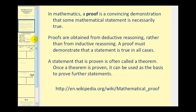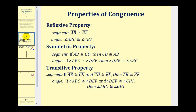Let's start by taking a look at the properties of congruence for segments and angles. The reflexive property states that for congruent segments we can change the order of the endpoints, and for congruent angles we can change the order of the points but not the location of the vertex.